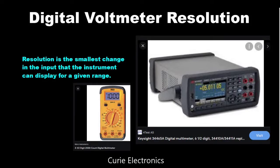In this video, we are going to learn about the resolution of a DVM, digital voltmeter. You might have seen different types of multimeters. If you see this Mecomic multimeter, here they have mentioned 'three and half digit, 2000 count digital multimeter.' What do you mean by that? 2000 count and three and half digit multimeter — what does it mean?